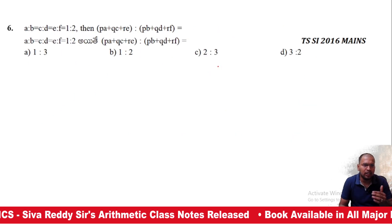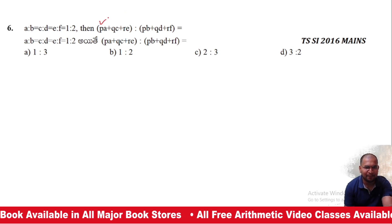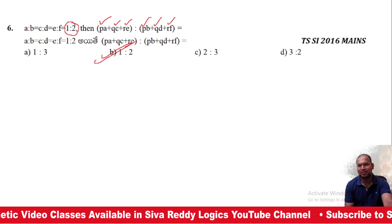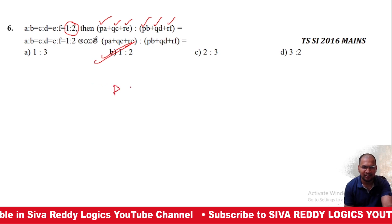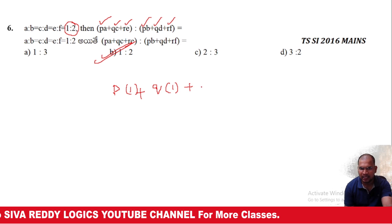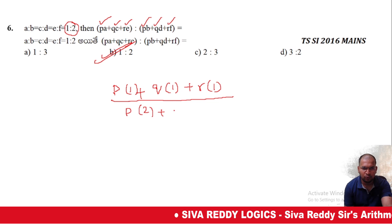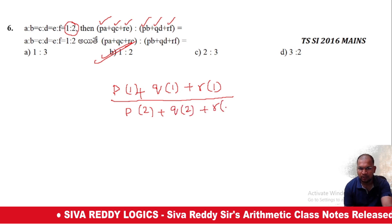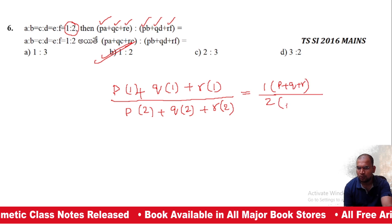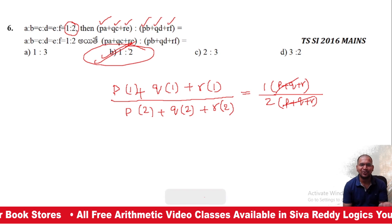Sixth question: If A:B = C:D = E:F = 1:2, then find PA+QC+RE to PB+QD+RF. The coefficients P, Q, R are the same on both sides. Substituting A=C=E=1 and B=D=F=2, the numerator is P+Q+R and denominator is 2(P+Q+R), giving ratio 1:2. The answer follows from equal coefficients.